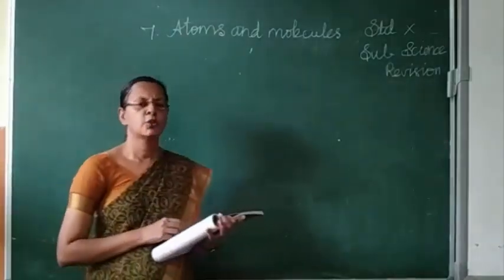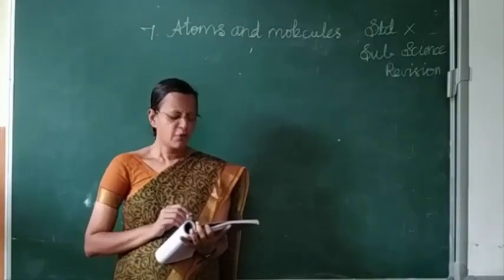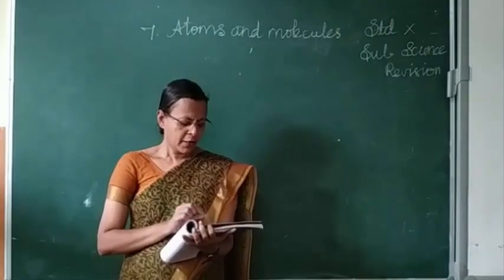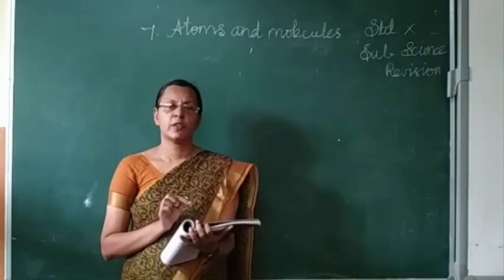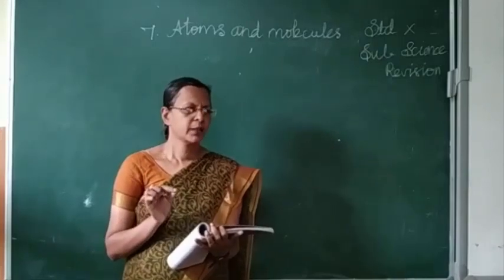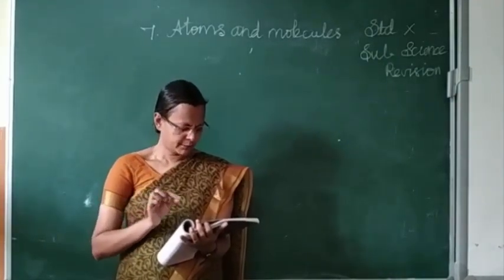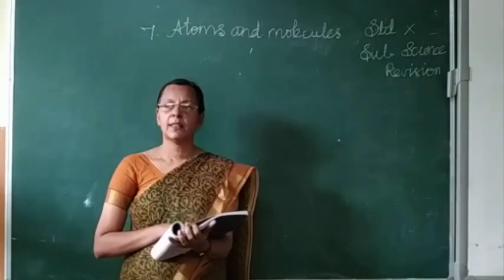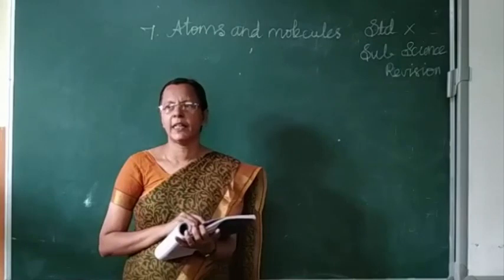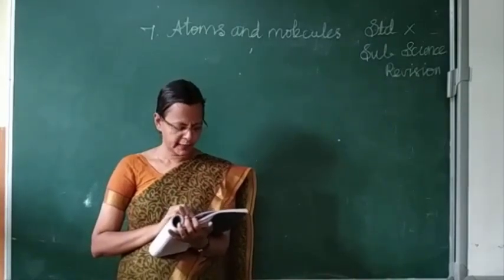First, choose the correct answer. First question: Which of the following has the smallest mass? The answer is option D — one mole of atoms of helium (Hg).